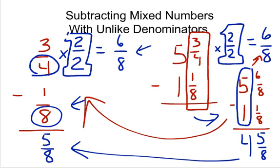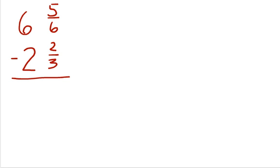Now let's do another problem like that. Let's take the problem 6 and 5/6 and subtract 2 and 2/3. Remember, we're trying to make the denominators the same. We need a common denominator. So again, I'm going to look and say, can I change, I look at my denominators, this one's a 3, this one's a 6. Can I change the 3 into 6 by multiplying? Answer is yes.